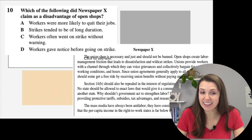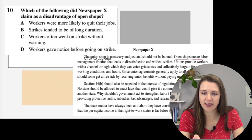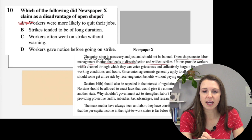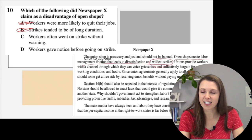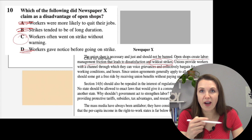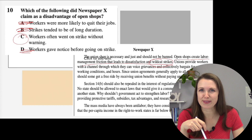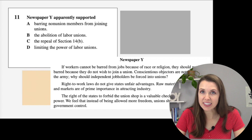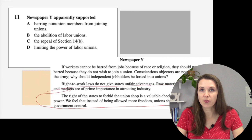Number ten: which did Newspaper X claim as a disadvantage of open shops? The answer is right in the second sentence: open shops create labor-management friction that leads to dissatisfaction and wildcat strikes. Workers more likely to quit? No. Strikes of long duration? No. Workers went on strike without warning — that's the answer, because a wildcat strike is when workers go on strike without warning. The answer is C.